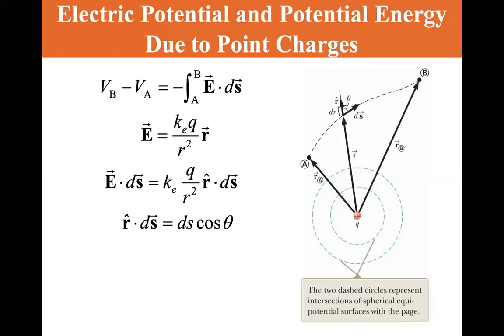And so r dot dS is equal to dS cosine theta since r is the unit vector. So it's one, so it's equal to dS cosine theta. So dS cosine theta is little dr. If you see this, dS is the projection of, if you look at the projection of dS on the r, you'll see there's a little dr here. So dS cosine theta is equal to dr.